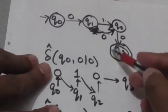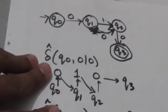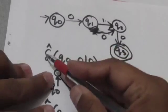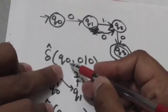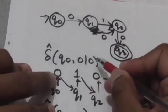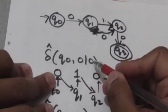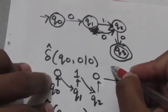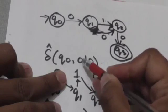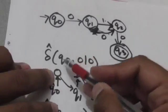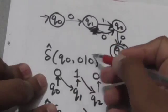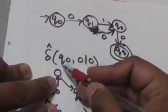Now see this DFA — its initial state is q0 and its final state is q3. We have to find out the output of the extended transition function for state q0 and the string of input symbols 0 1 0. Its output would be the state in which the machine would be after reading the input string 0 1 0 from state q0. We have to find out where the machine would be after reading this string.